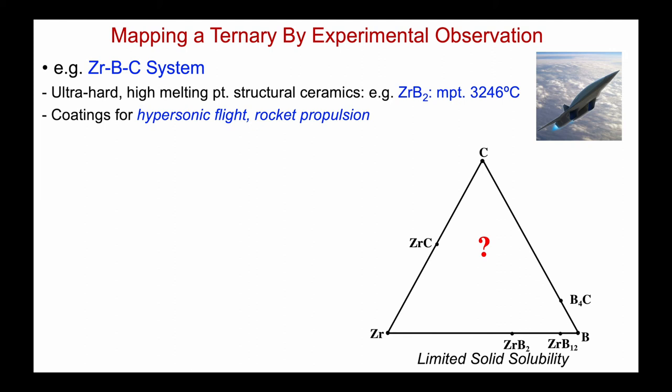Let's turn to another example where we're mapping a ternary through experimental observation — the zirconium-boron-carbon system, which is a very important ceramic system, as within it there are very high melting-point compounds. For example, zirconium diboride has a melting point of over 3000°C, one of the highest known. Materials within this system have been explored as coatings for hypersonic flight and rocket propulsion, where vehicles must resist extremely high temperatures.